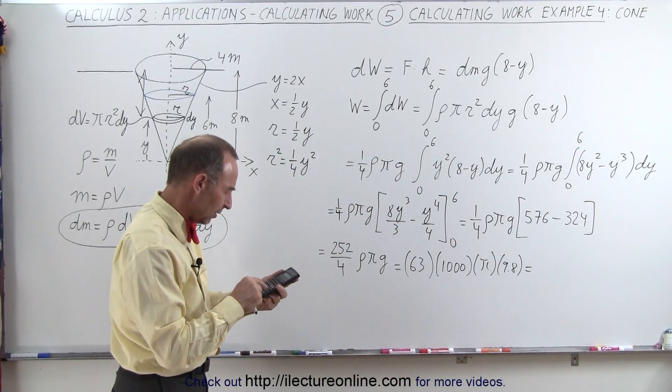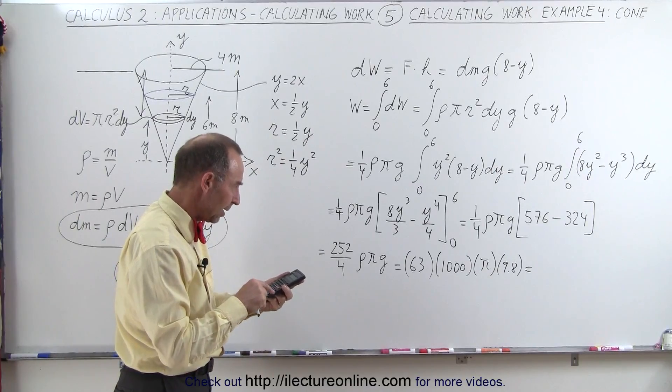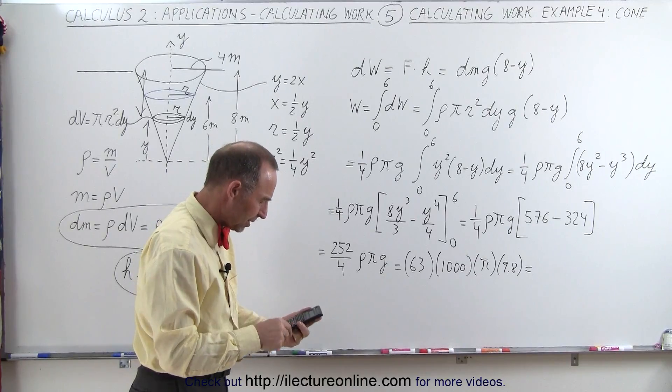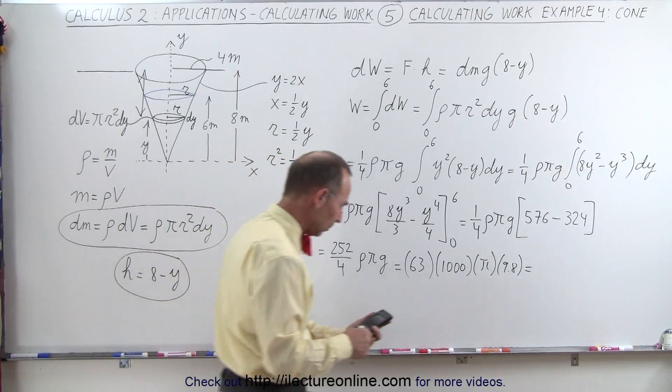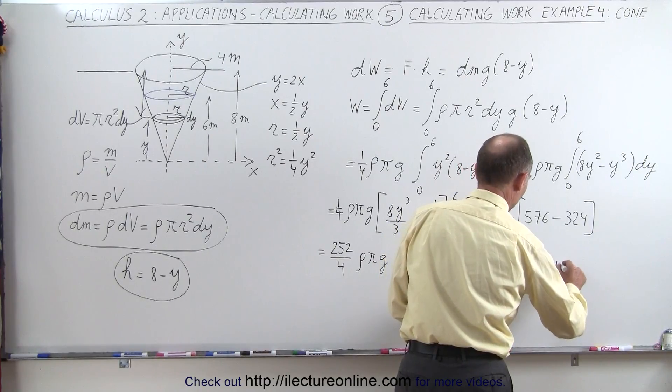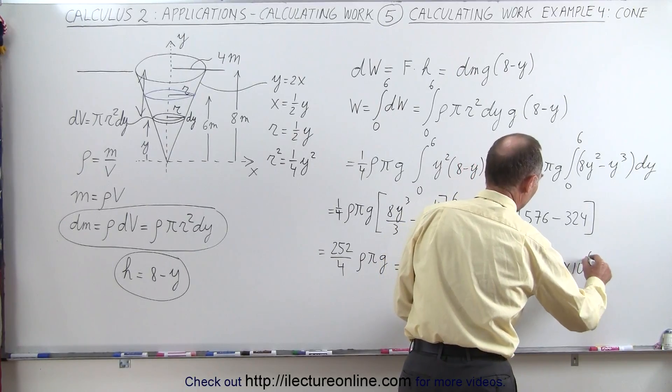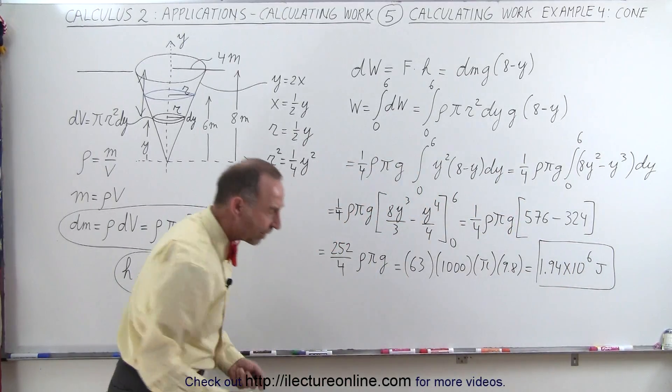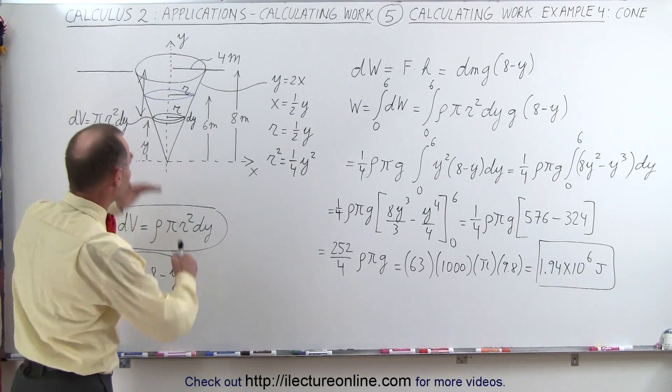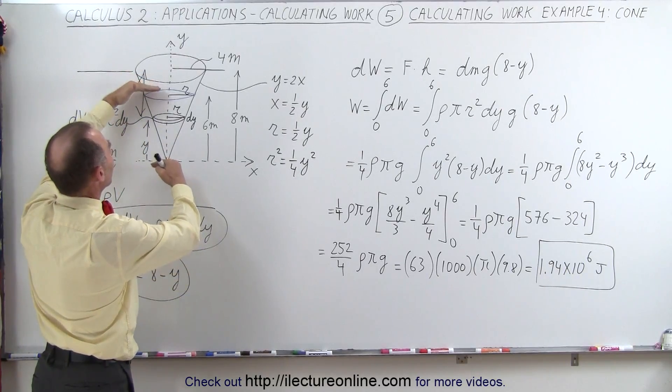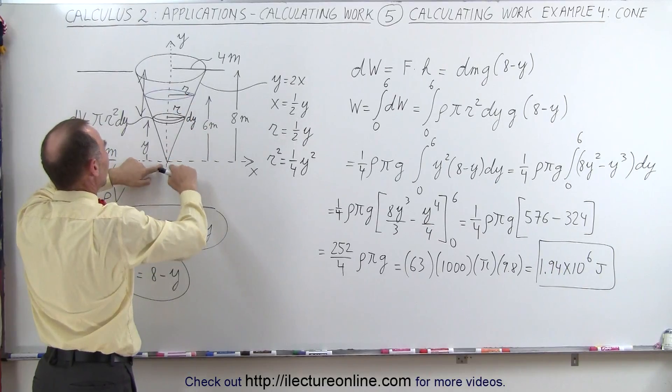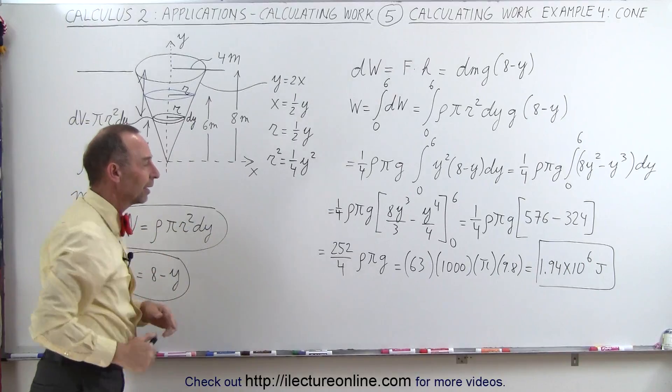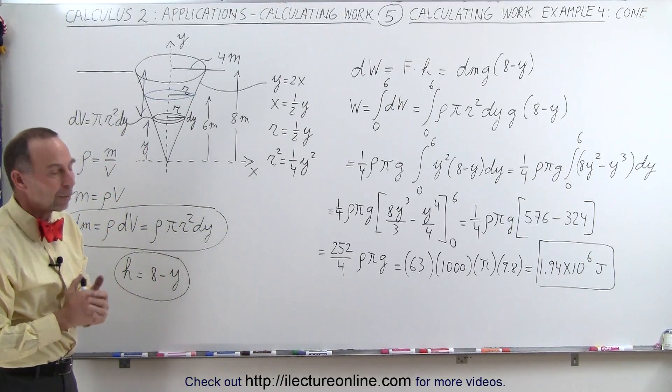Times 1,000 times pi and times 9.8 equals, which leaves us with 1.9, let's see here, that's 3 zeros, yes, 1.94, 1.94 times 10 to the 6th, and of course the units again will be joules. So that's how much energy, or that's how much work it takes to lift the water in this upside down cone that has filled the cone from height 0 to height equals 6 meters. When you lift it up to the surface, it will require that amount of work. And that's how it's done.